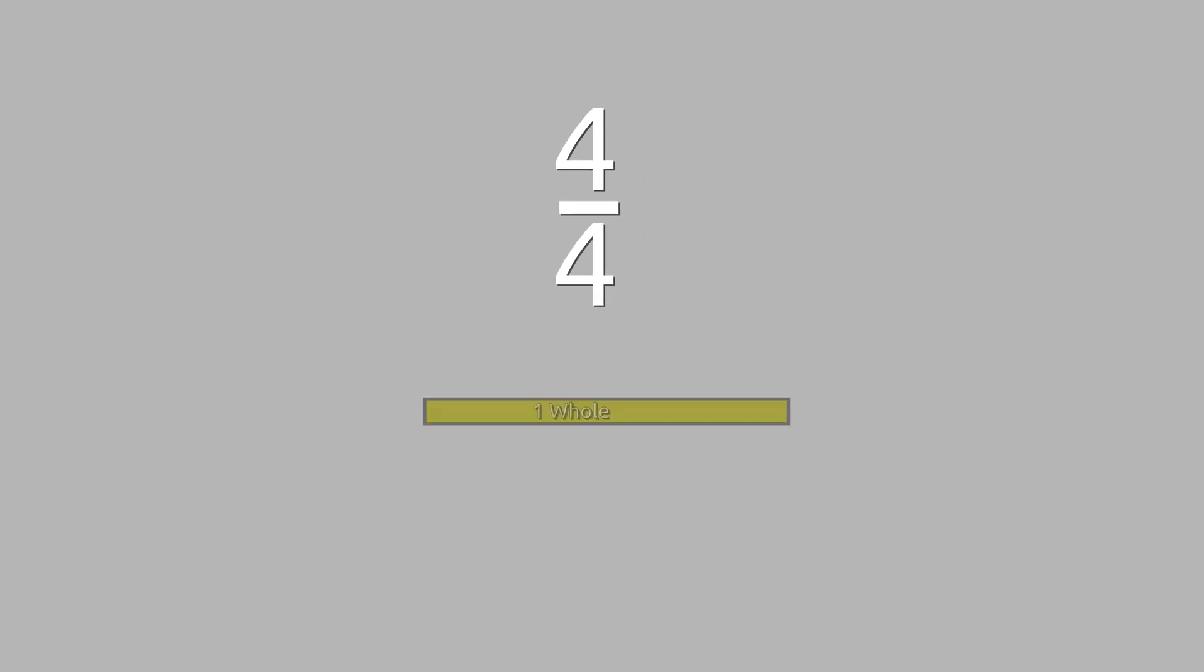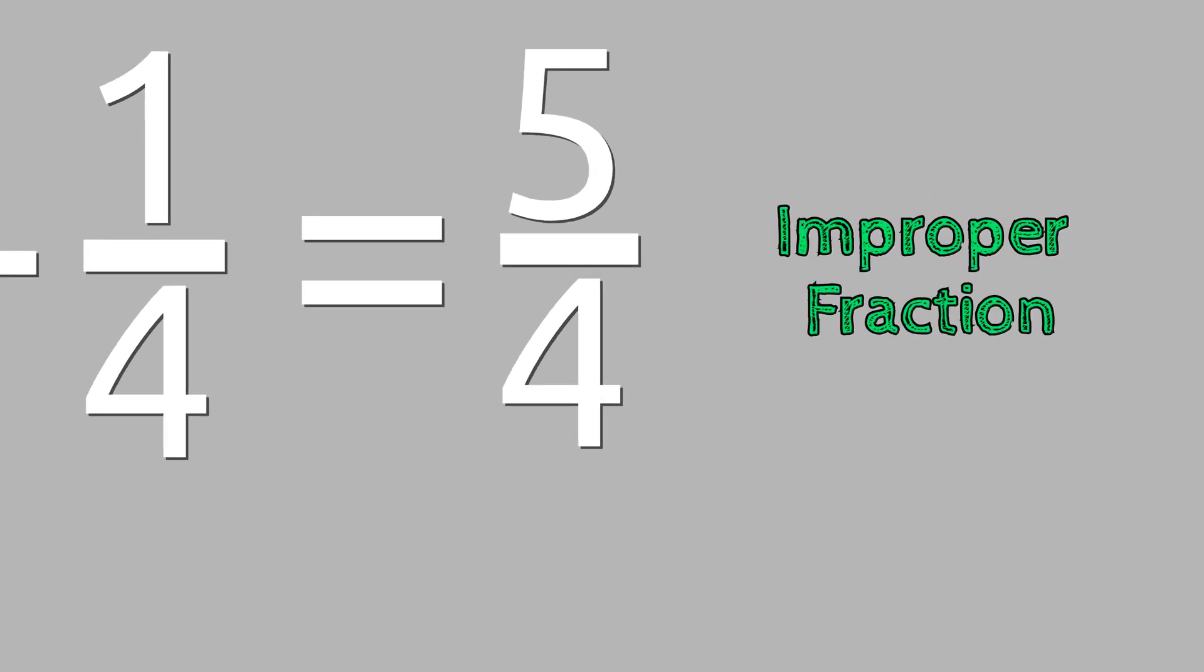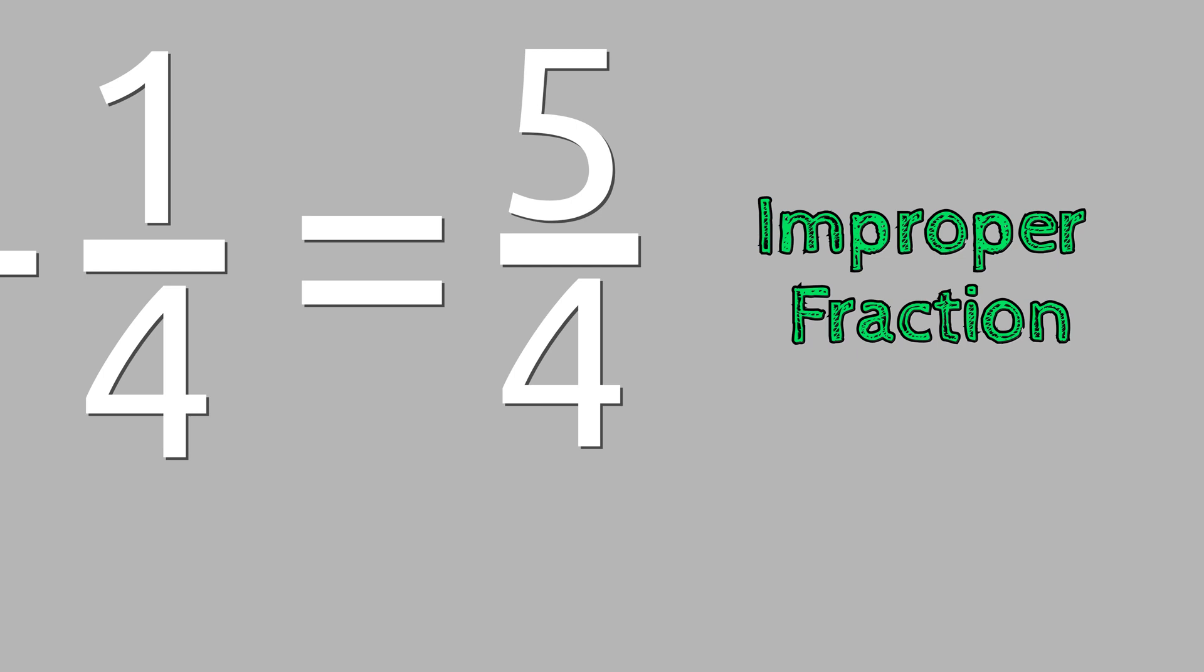Now what would happen if we were to add another fourth to the fraction 4 fourths? Our new fraction would be 5 over 4 or 5 fourths. 5 fourths is an improper fraction because it is greater than 1 whole.